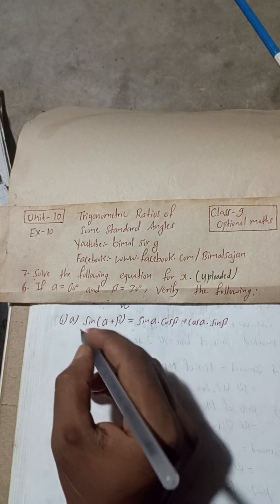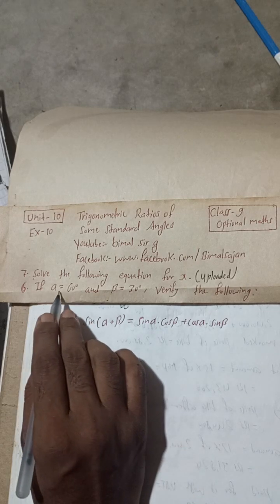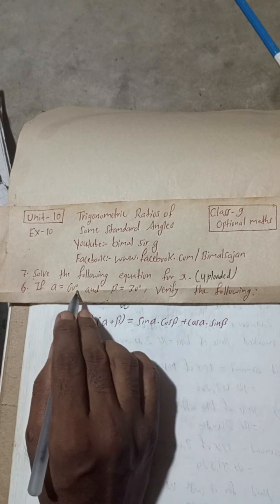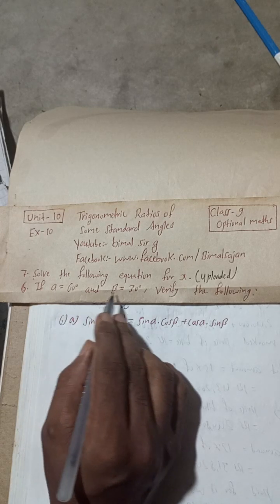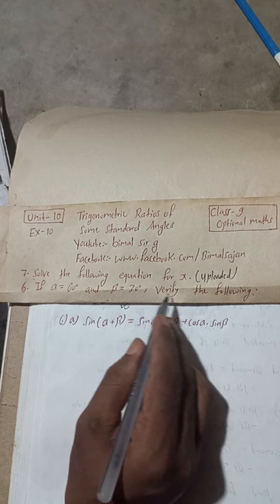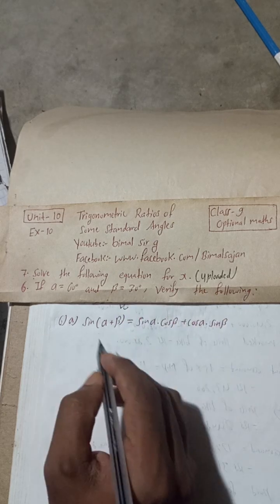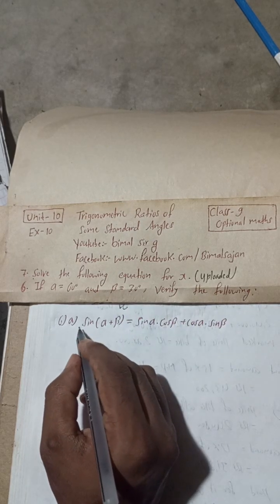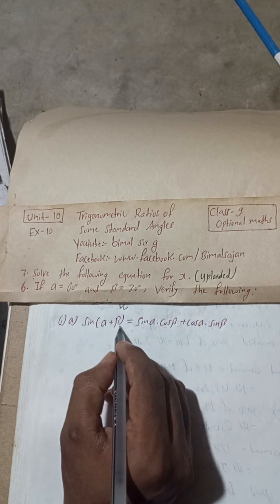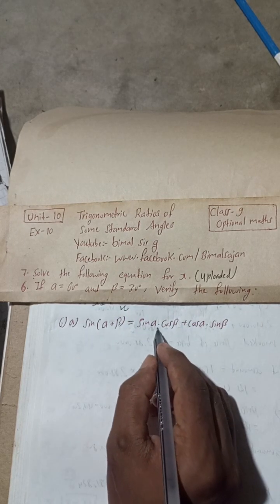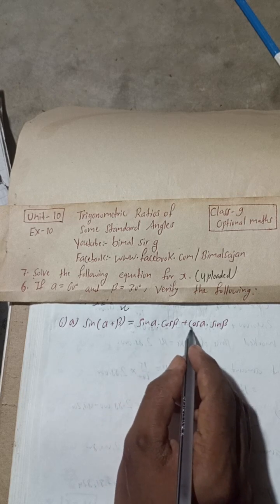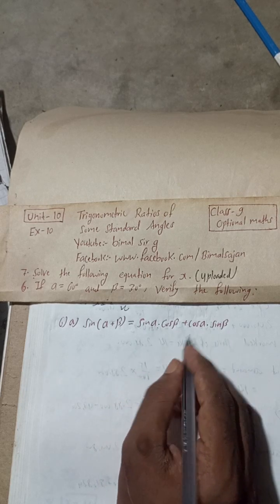Now let's begin the solution. If alpha is equal to 60 degrees and beta is equal to 30 degrees, verify the following. Number 8: sin(alpha + beta) is equal to sin alpha cos beta plus cos alpha sin beta.